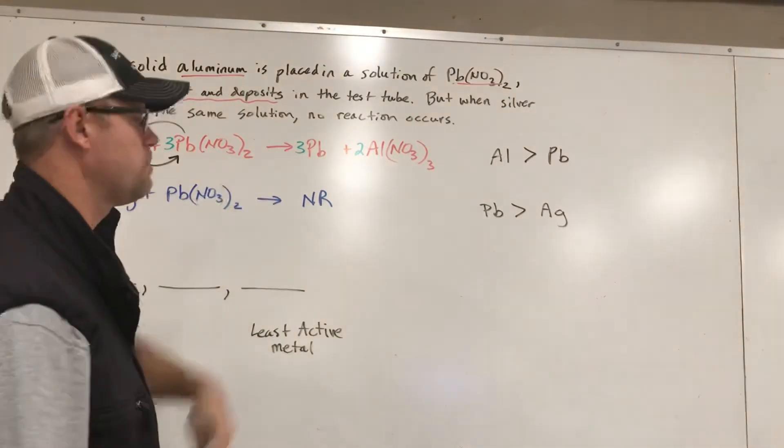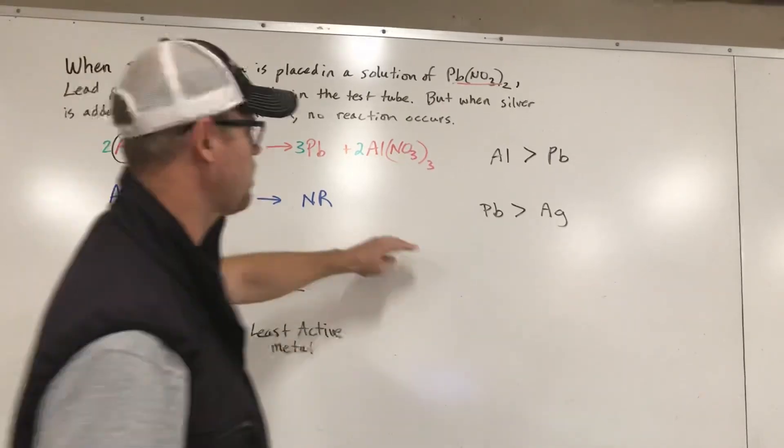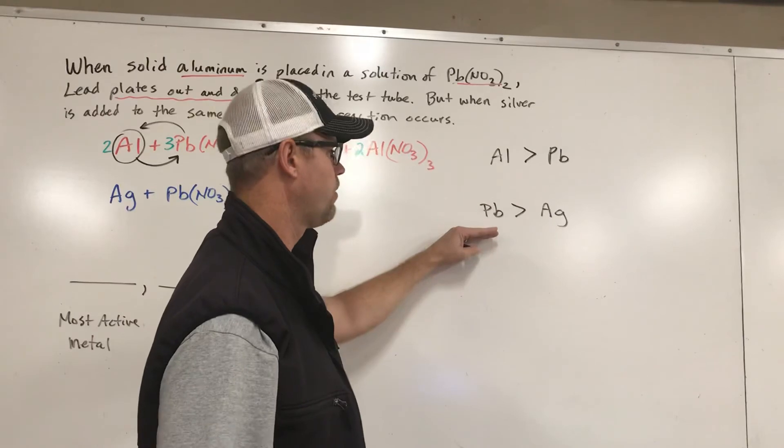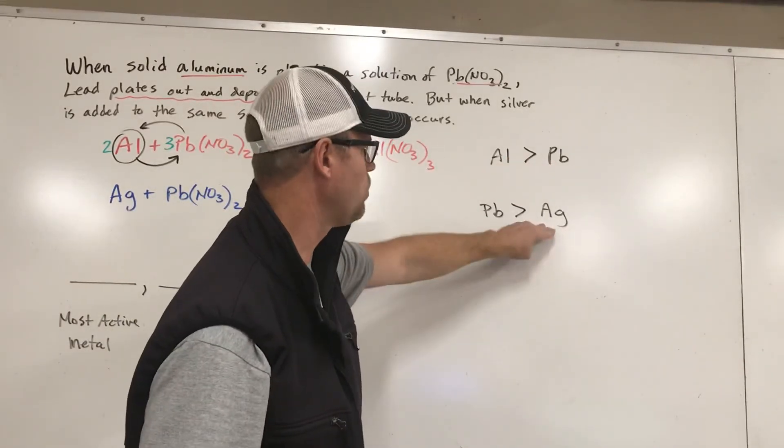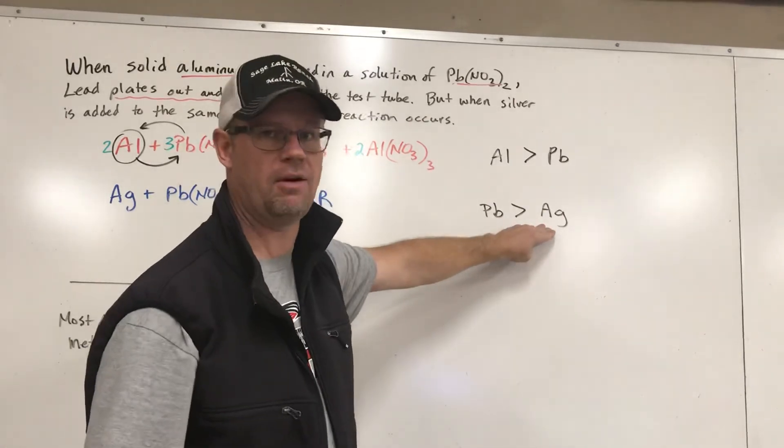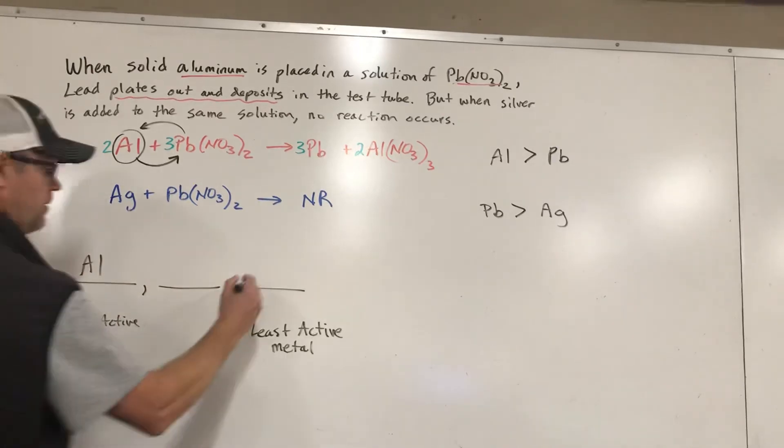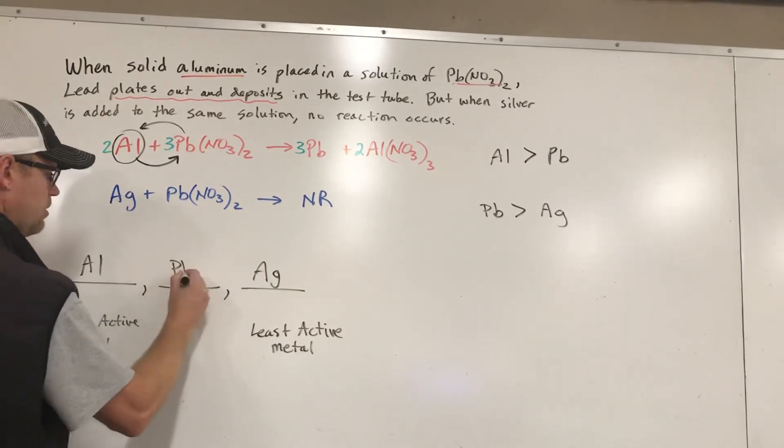But it's a process of elimination and just making a list of these like highest to lowest. So when I look at these, I would say aluminum is the most reactive metal out of all these. Aluminum must be the strongest because it kicked lead out. Silver must be the weakest because it couldn't kick lead out. And lead must be in the middle. So I'm going to write aluminum as the most reactive, silver as the least reactive, and then lead goes in the middle.